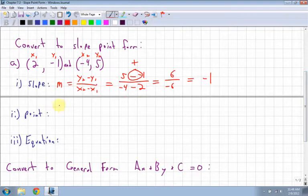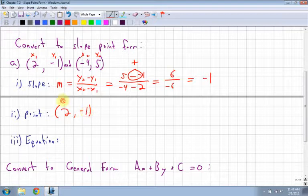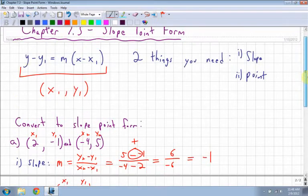The point that you pick can be anything. It can be either one of the points that you're given or any point on the line. So I'm going to pick the first one just because it's there. So my point I'm going to pick is 2, negative 1, and that's my x₁ and my y₁. And let's just remind ourselves what the equation looks like.